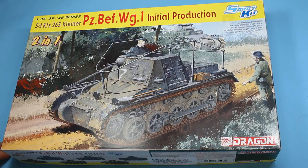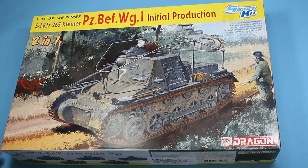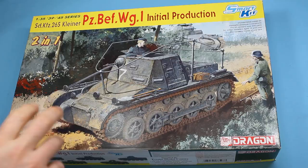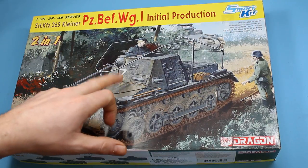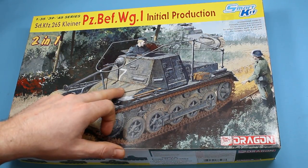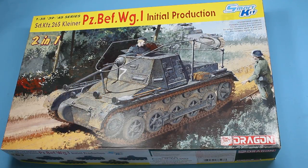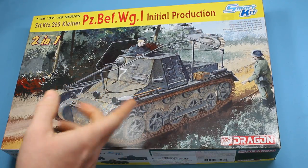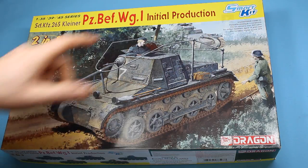This is a Dragon Smart kit which means it's got a few old sprues from their original Panzer I B boxing and then it's got a few updated sprues to bring it into line with this. There was a previous boxing of the command version of the Panzer I B and then this includes parts to make the initial production.